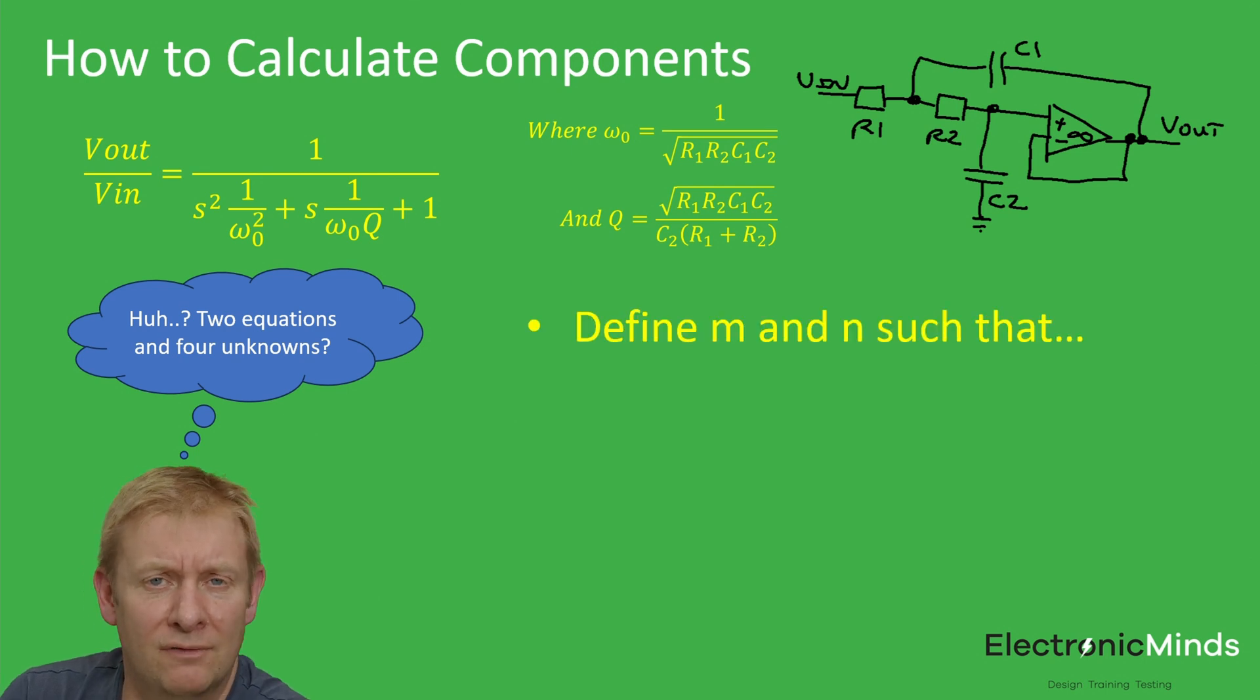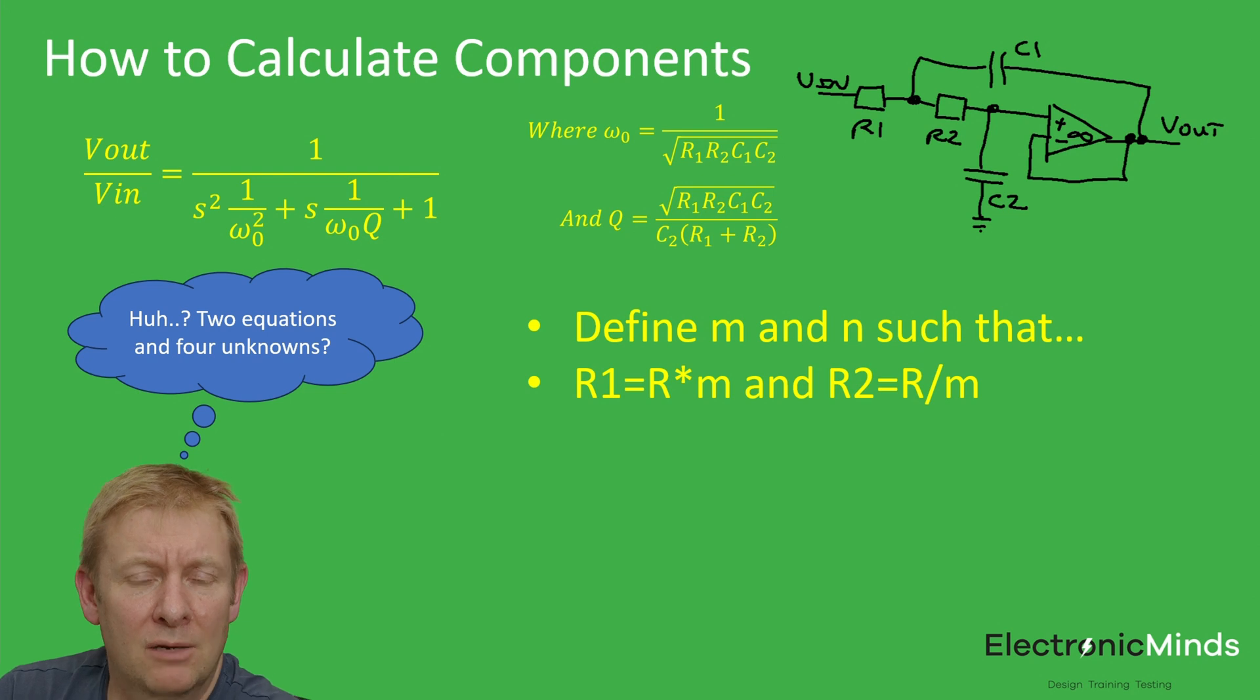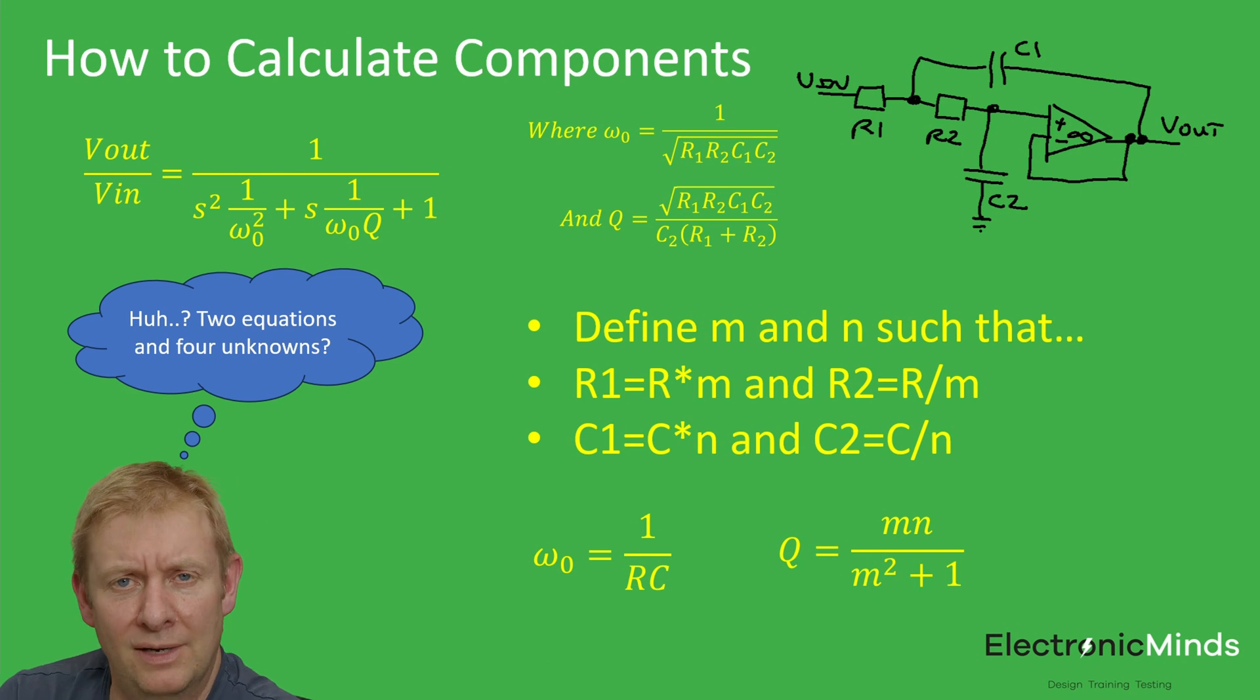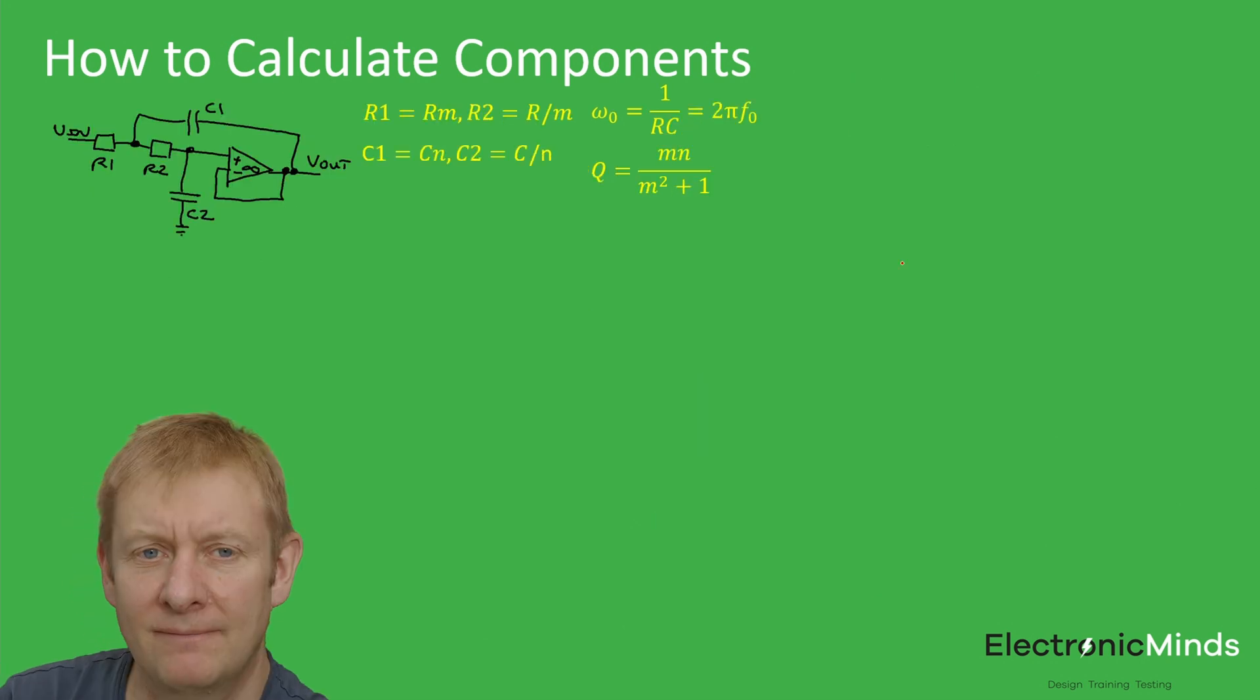We can define two new parameters, m and n, which define the ratio between the resistor values and the ratio between the capacitor values. If we work through the maths, we get simplified forms for omega naught and Q. The great thing is that omega naught doesn't involve m and n, so we can set the corner frequency without choosing m and n. Then the Q value is purely a function of m and n, so we can design our Q factor irrespective of the omega naught value. This decouples the two parts of the filter design.